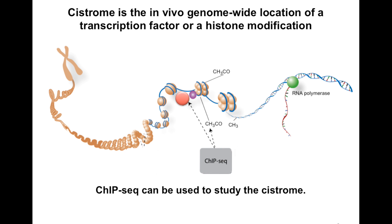The Cistrome refers to the set of cis-acting targets of a trans-acting factor on a genome-wide scale, also known as the in vivo genome-wide location of transcription factor binding sites or histone modifications.